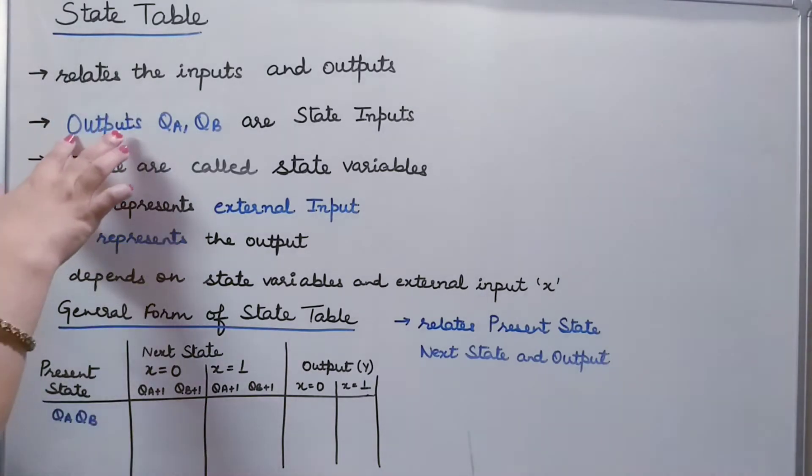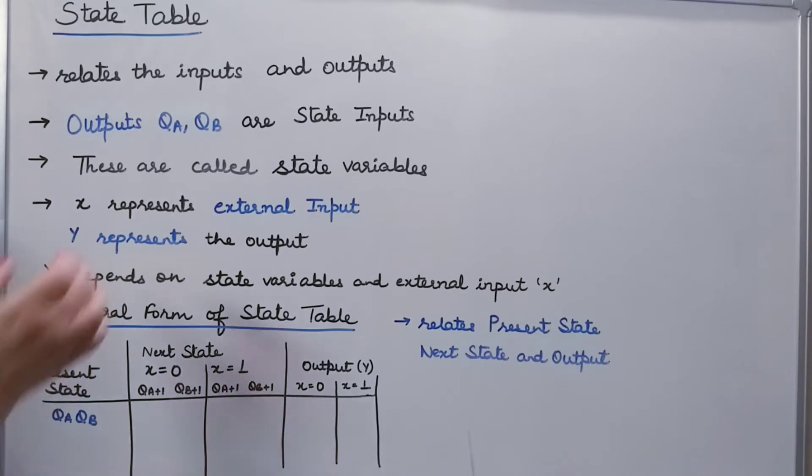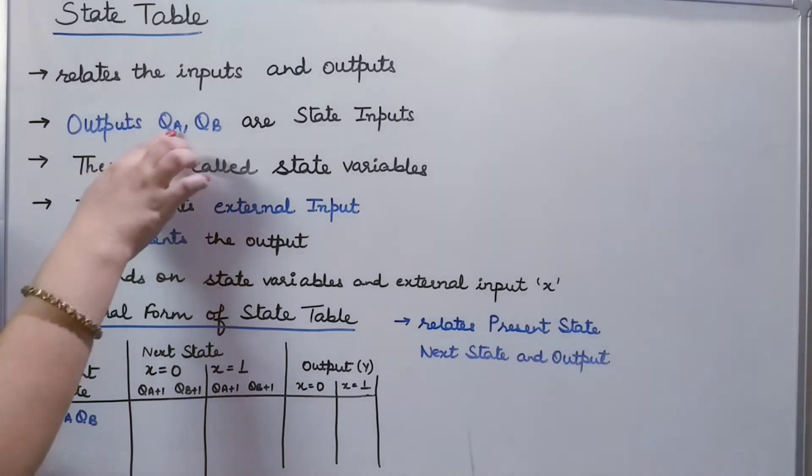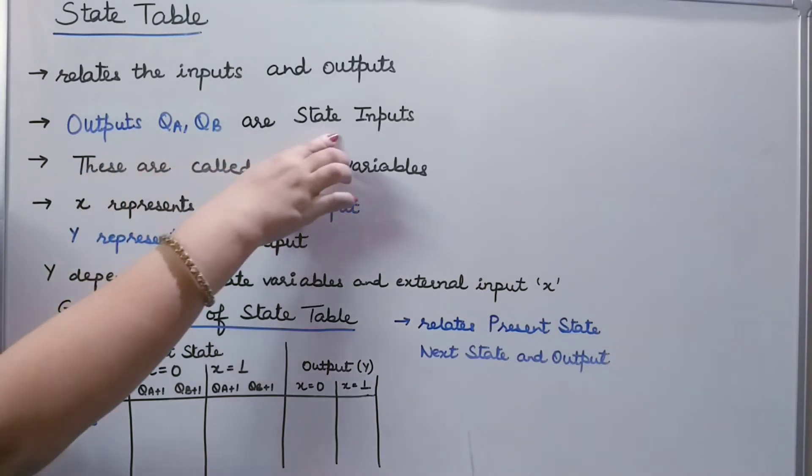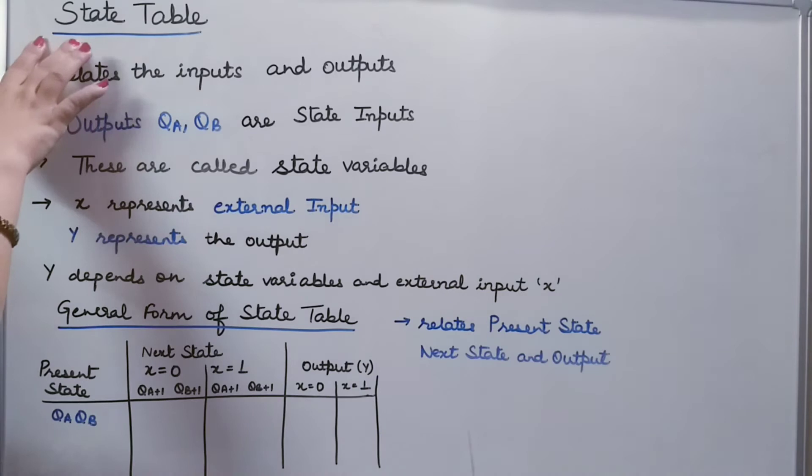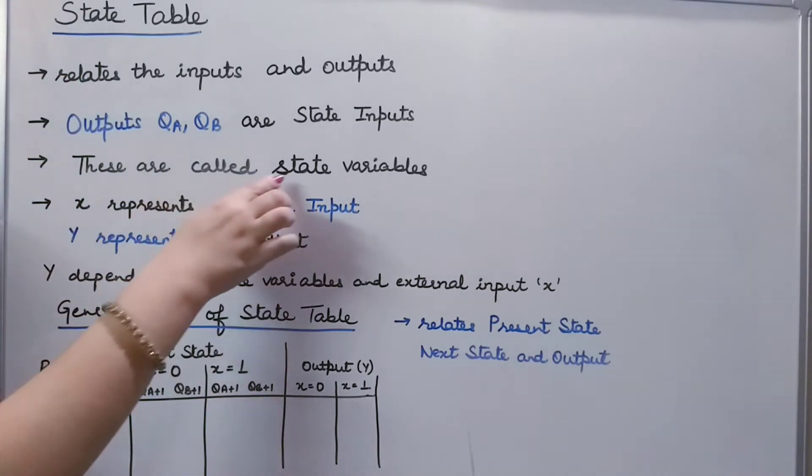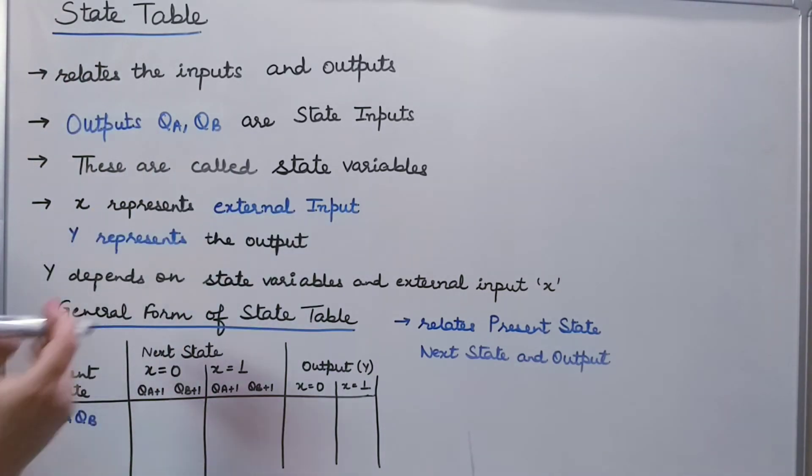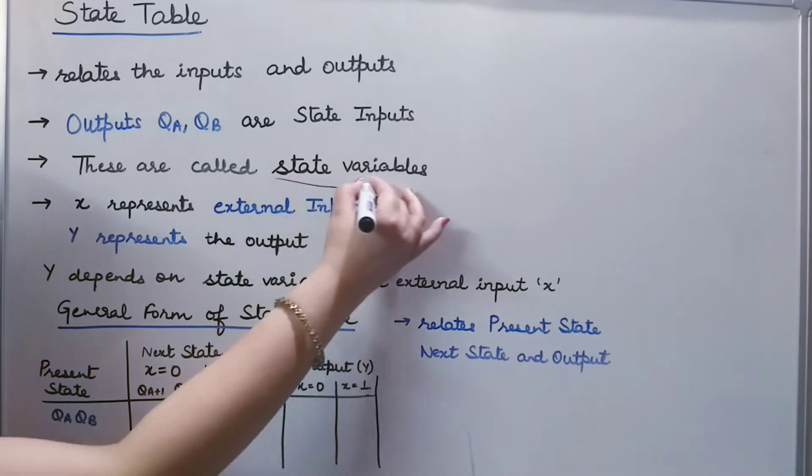The outputs which are basically represented by QA, QB, depending upon how many flip-flops do I have, these are basically called the state input to the state table. Most important, these are also called as state variables.